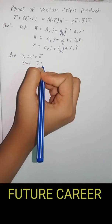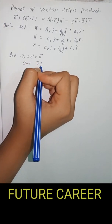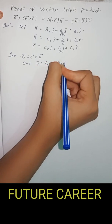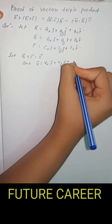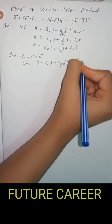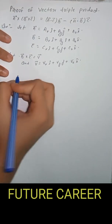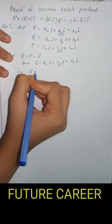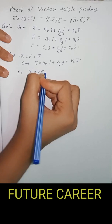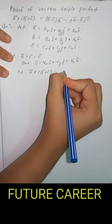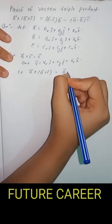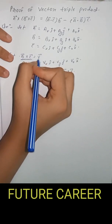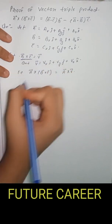V vector equals to Vx i cap plus Vy j cap plus Vz k cap. So A cross B cross C equals A cross V, because we assume that B cross C equals V.